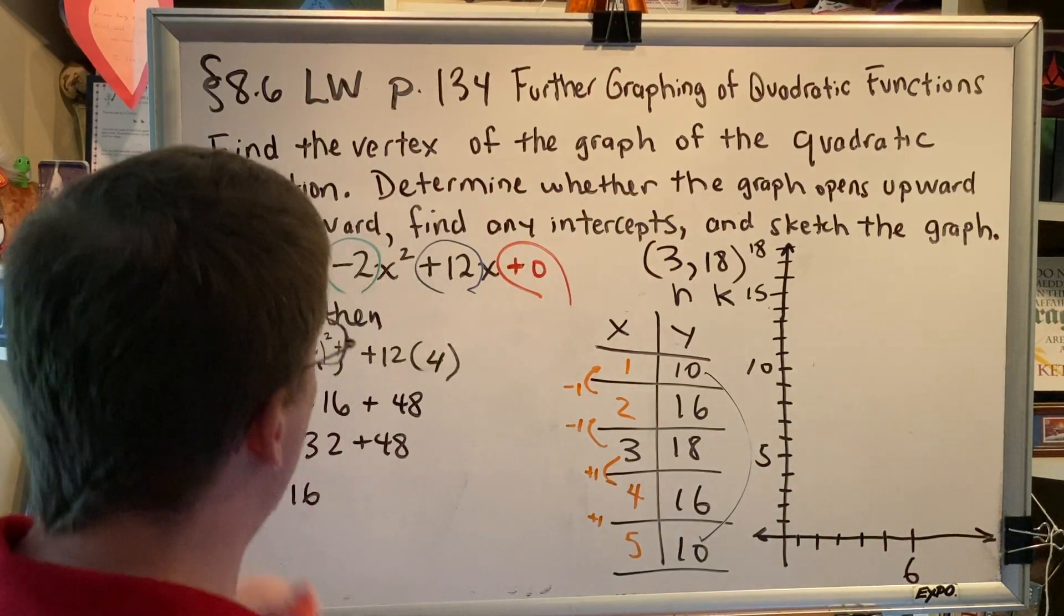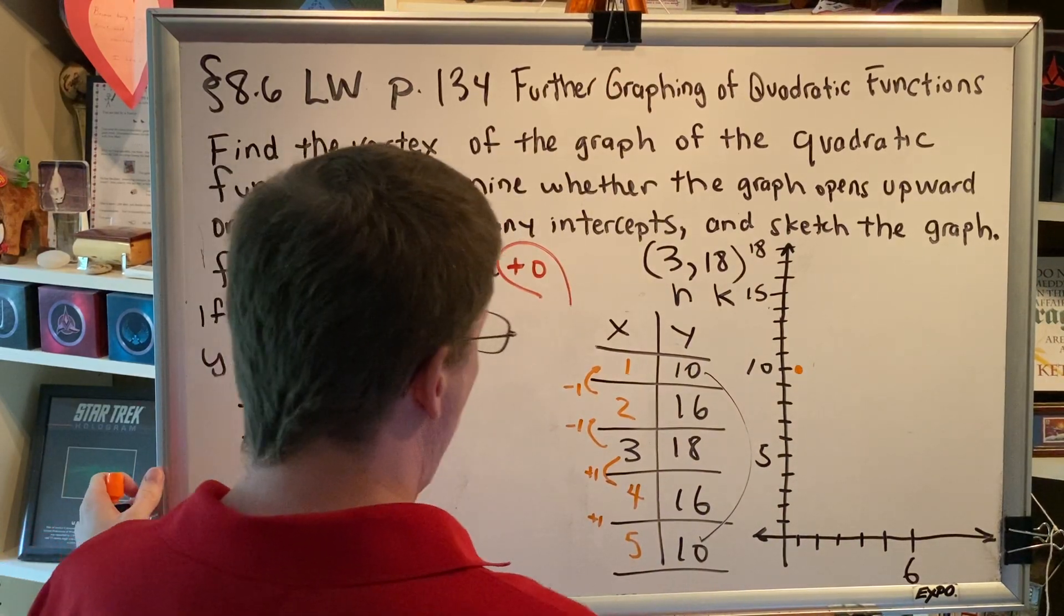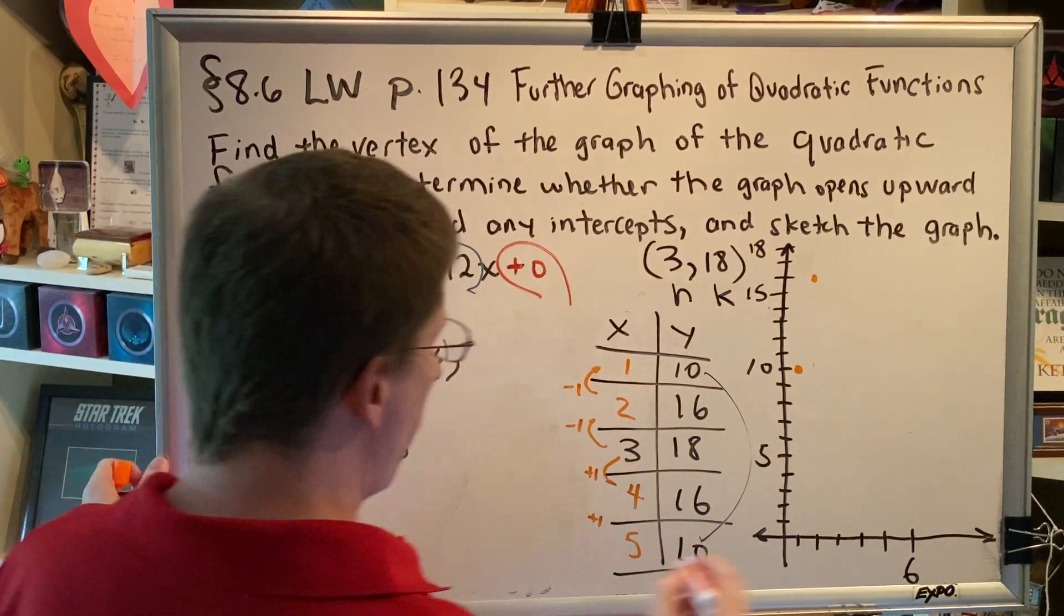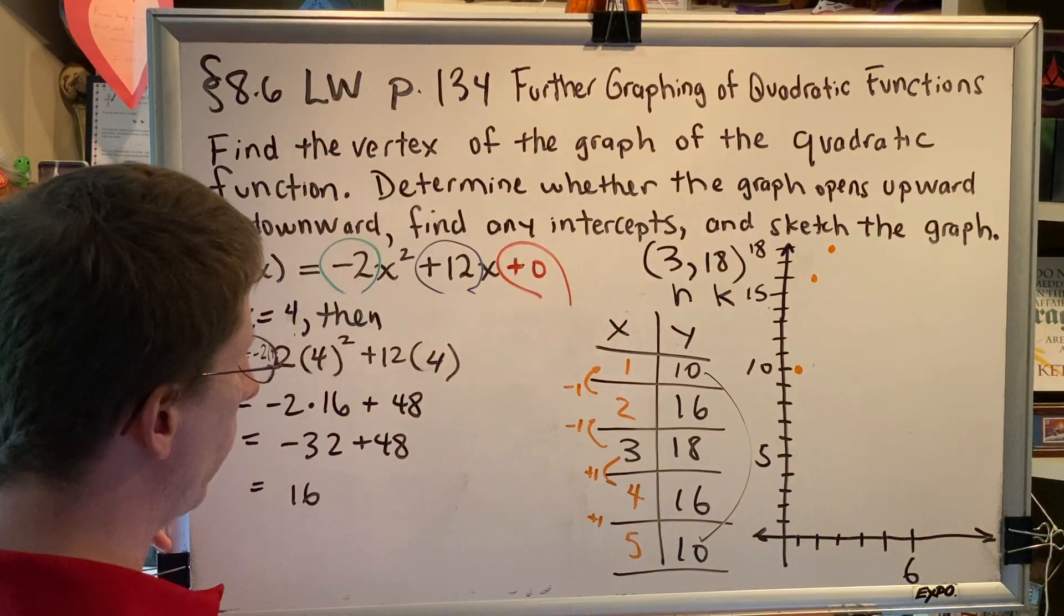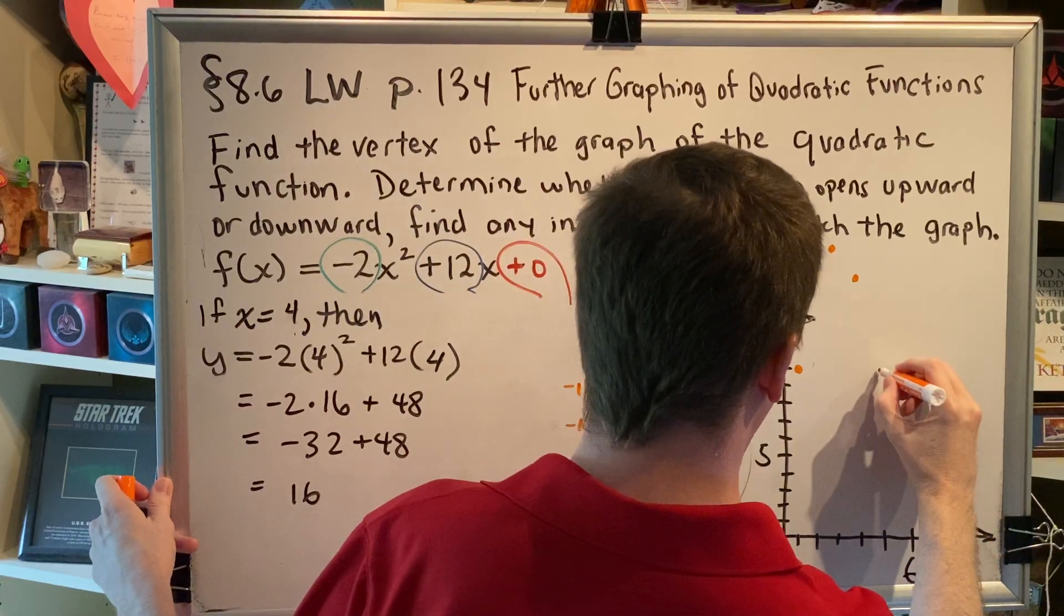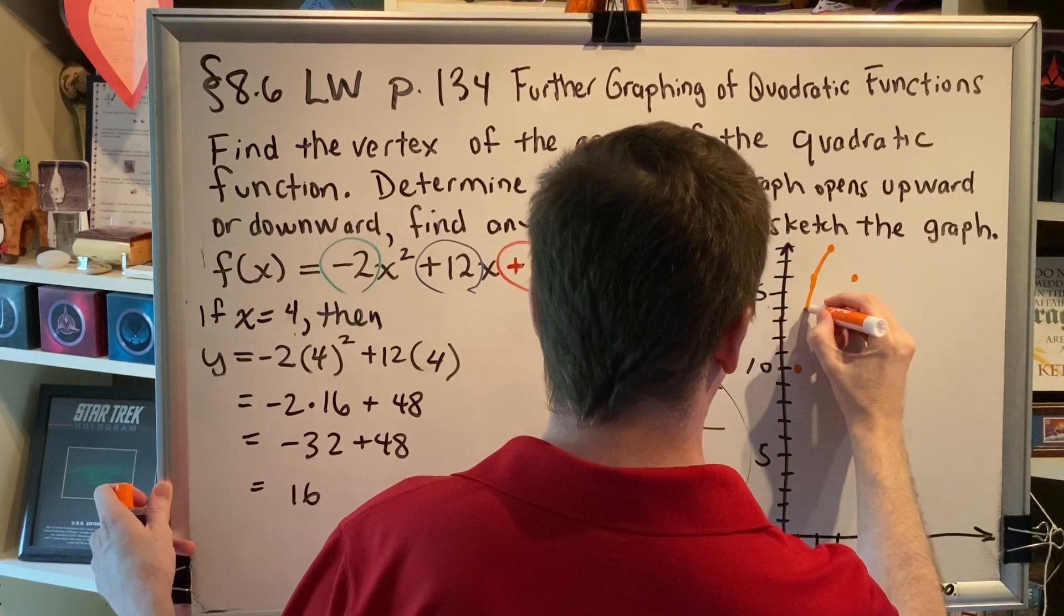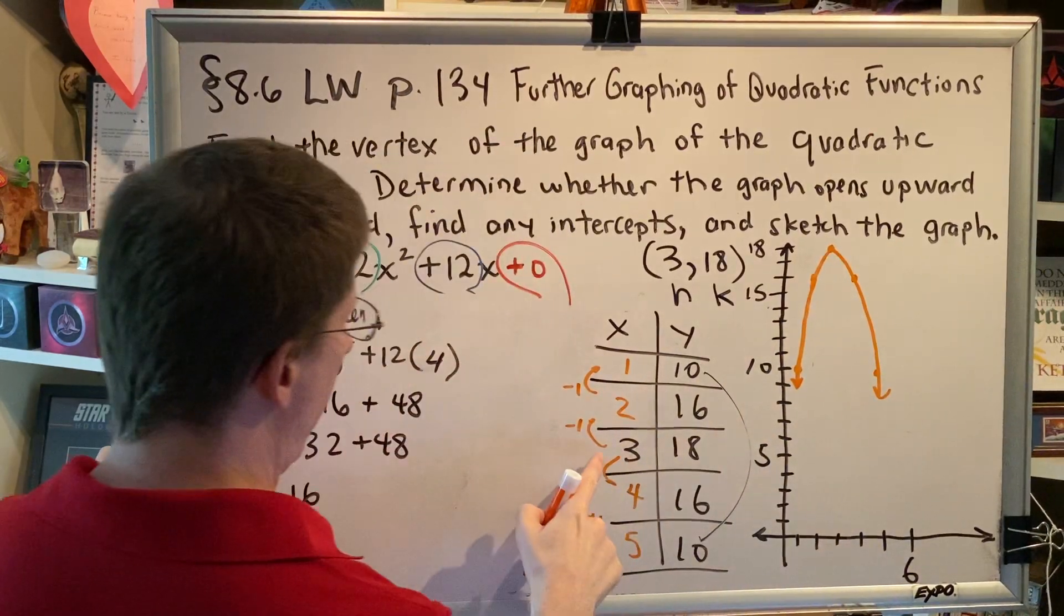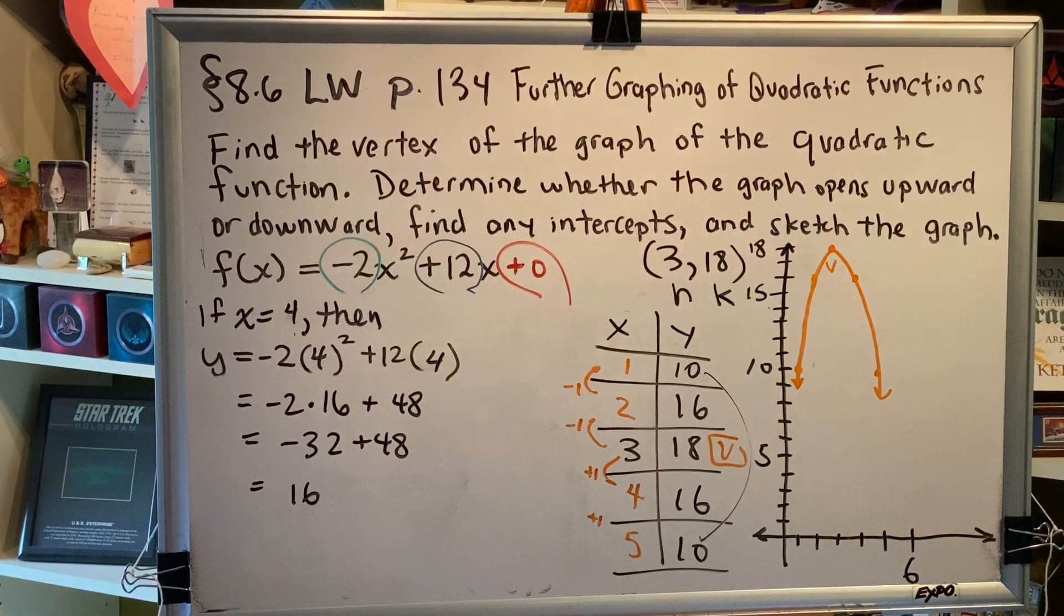Let's plot our points. So we've got (1, 10), that will be here. We've got (2, 16), that will be here. (3, 18), that will be here. (4, 16). (5, 10). And this is a parabola. It opens down. I know that because the value of a is negative. My vertex was right here at (3, 18). I can label that. And so that's what my graph is going to look like.